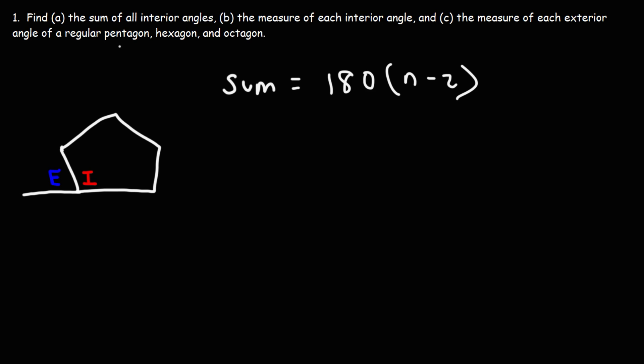The word penta means five, so we're dealing with a five-sided polygon. Hexa represents six, octa is eight. Tri — triangle — is a three-sided polygon. Quad means four, as in quadrilateral, a four-sided polygon. A heptagon — hepta means seven. Nona is nine, deca is ten.